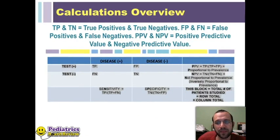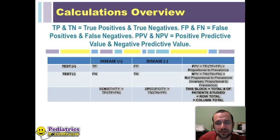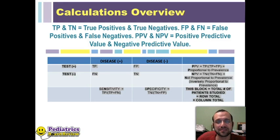Here's the famous table. I'm going to go through it in rows and columns, so just pay close attention, and if you need to listen to it multiple times, please do so. Row one, going across, is the disease status of the patient — positive or negative.